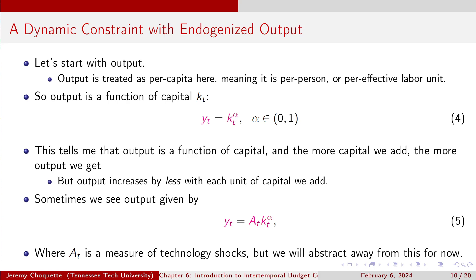If I make output and investment functions of capital, that begins to make a lot of sense. Output is per capita here — per person or per effective labor unit. Output is a function of capital: Y = F(K). The more capital you have, the more output you get — but it increases by less with each unit of capital. So Y = K^α, where α is between 0 and 1. That exponent being between 0 and 1 means output is increasing but at a decreasing rate.